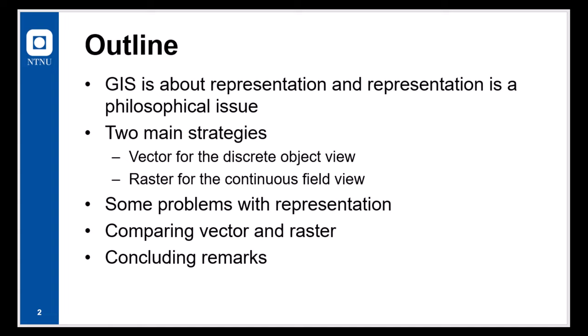So here is the outline of the video or the lecture. GIS is about representation and there are two main strategies in GIS: vector for the discrete object view and raster for the continuous field view. These are covered in all textbooks in GIS, but I will in this video also present representation as a philosophical issue. I will also provide some problems with representation. There are many, but I will focus only on a few of them. And then I will compare the two strategies, the vector versus the raster, and finally, having some concluding remarks.